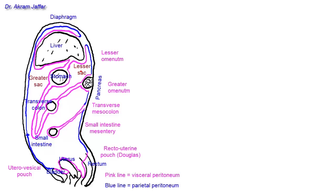Embryologically speaking, this sac was not present originally; because of the folding of the gut and mainly the rotation of the stomach, a diverticulum or recess is created behind the stomach. This recess communicates with the greater sac through an opening at approximately the free border of the lesser omentum.